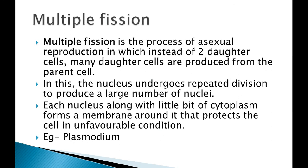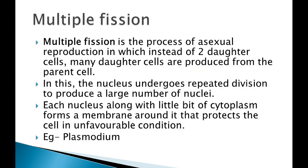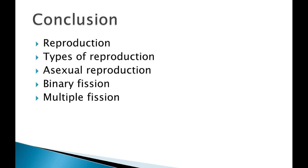I hope in this video binary fission and multiple fission is clear to you. Please draw the diagrams of all this because without diagrams this chapter cannot be fully understood. So what we have studied is: reproduction, types of reproduction, asexual reproduction, binary fission, and multiple fission. That's all for today. Thank you and have a nice day. If you have any doubt you can contact me.